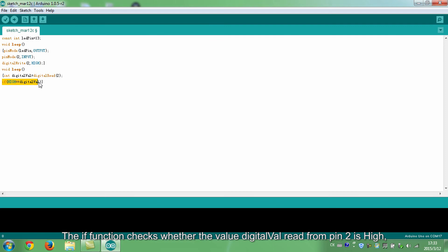The IF function checks whether the value digital valve read from pin 2 is high. That is, see whether the angle of the tilt switch changes or not.